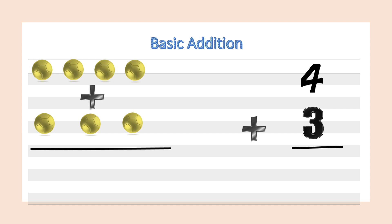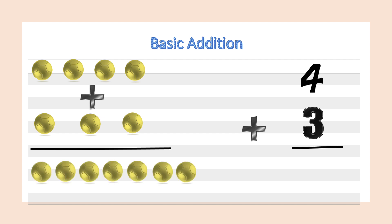And let's count together: one, two, three, four, five, six, seven. We have seven balls all together. So the sum of four and three is equal to seven.